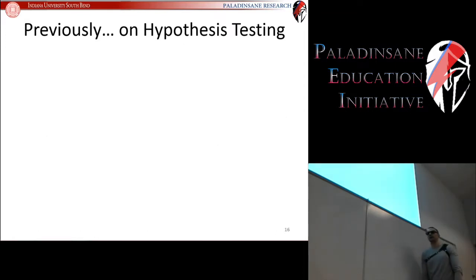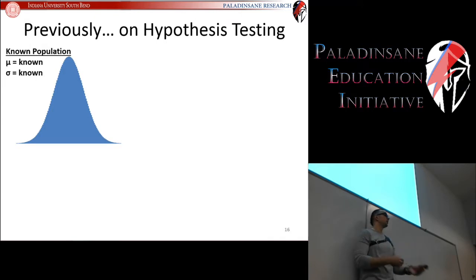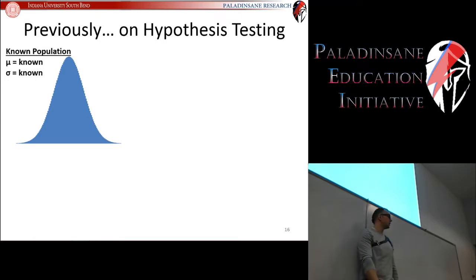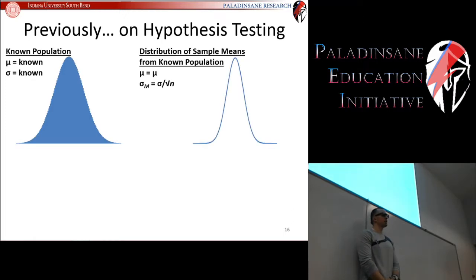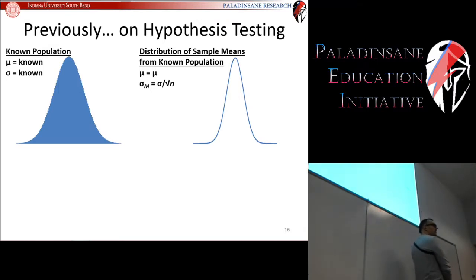Now let's take a step back and recap hypothesis testing from before. Previously when we were hypothesis testing, we were dealing with a very artificial situation where we knew the population we were dealing with. We knew what the mean of the population was and what the standard deviation was. From that, we could make our comparison distribution — the mean of the comparison distribution is the same as the population mean, and the standard deviation is the population standard deviation divided by the square root of the sample size.